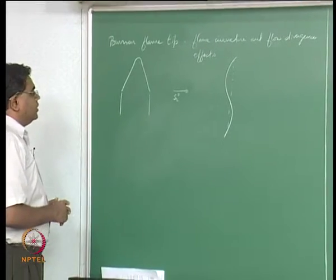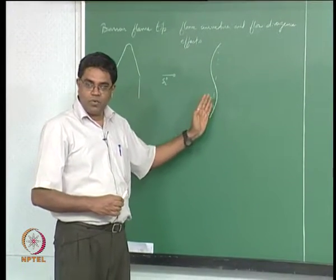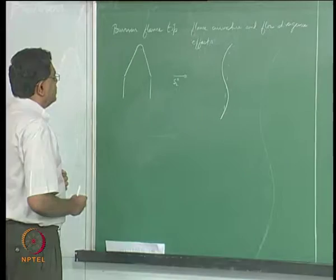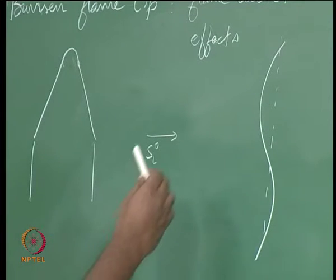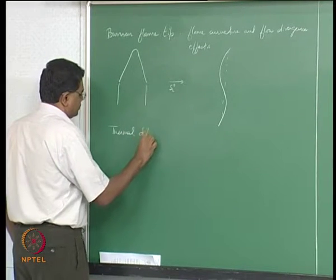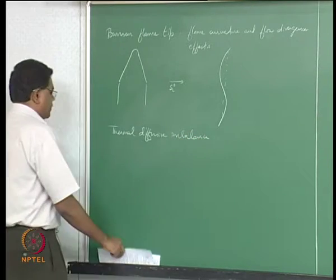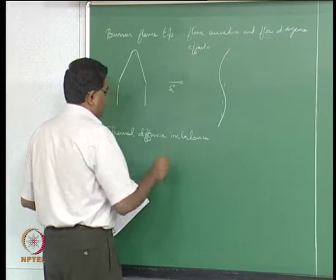Typically in the classroom, if you explain what is happening to the concave and convex parts, in the exam you can expect a question about what happens in the concave part. We want to talk about two different kinds of processes that come about when you have this kind of curvature: one is a thermal-diffusive imbalance, and the other is related to flow divergence.